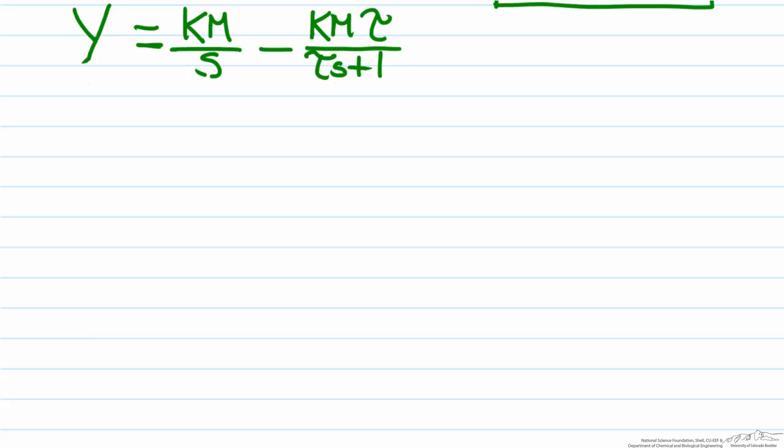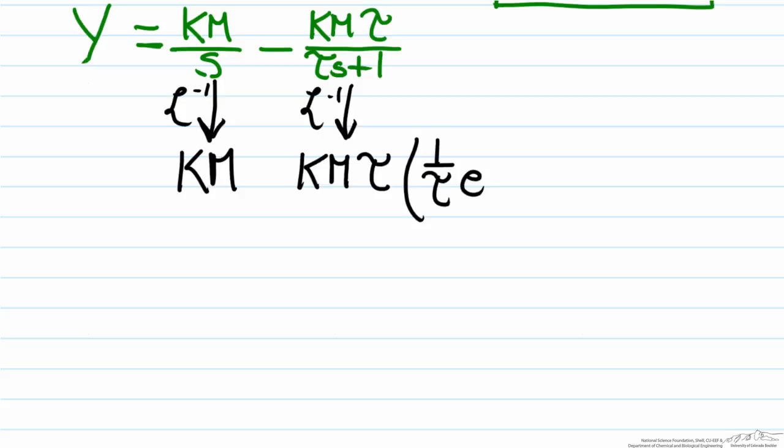Substituting these values in, now that we have separated out the two terms, we can easily take the inverse Laplace transform of both of these. The inverse Laplace transform of km over s is just going to be km, and the inverse Laplace transform of km tau over tau s plus one is going to be km tau, the constant multiplied by the inverse Laplace transform of one over tau s plus one, which is one over tau times e to the negative t over tau.